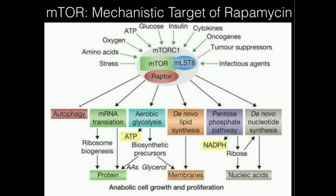In general, mTOR is a complex. There are other proteins involved in complexing with it, and they ultimately promote many functions within cells. In this figure, if you see an arrow with a head on it, that means stimulates. If it's an arrow that ends in a line, that means inhibits. Keep that in mind when looking at this picture.